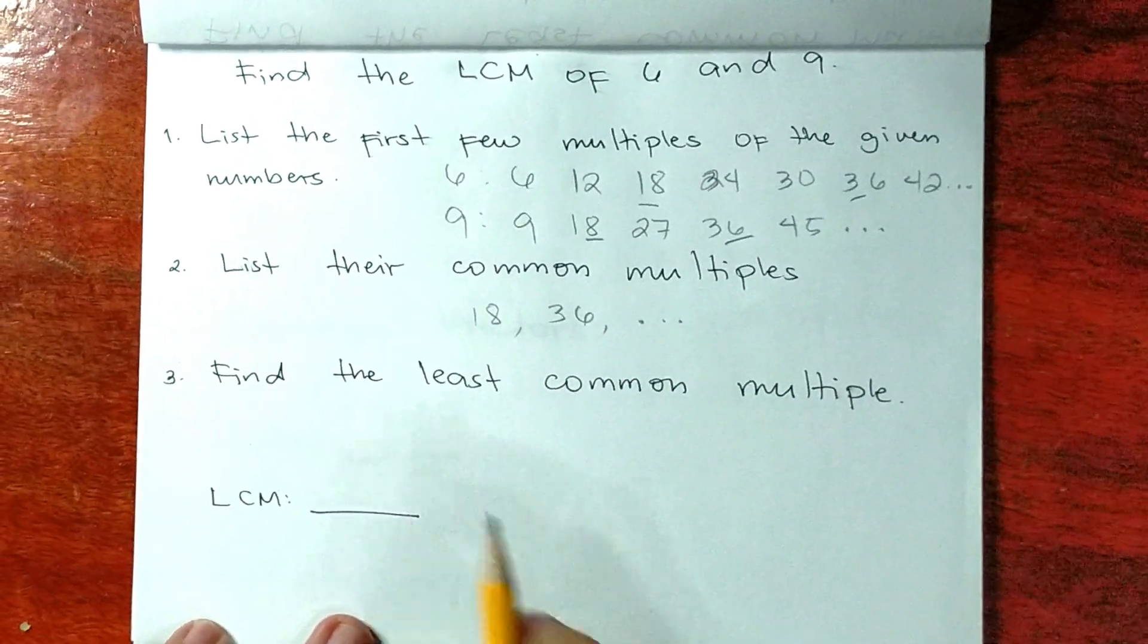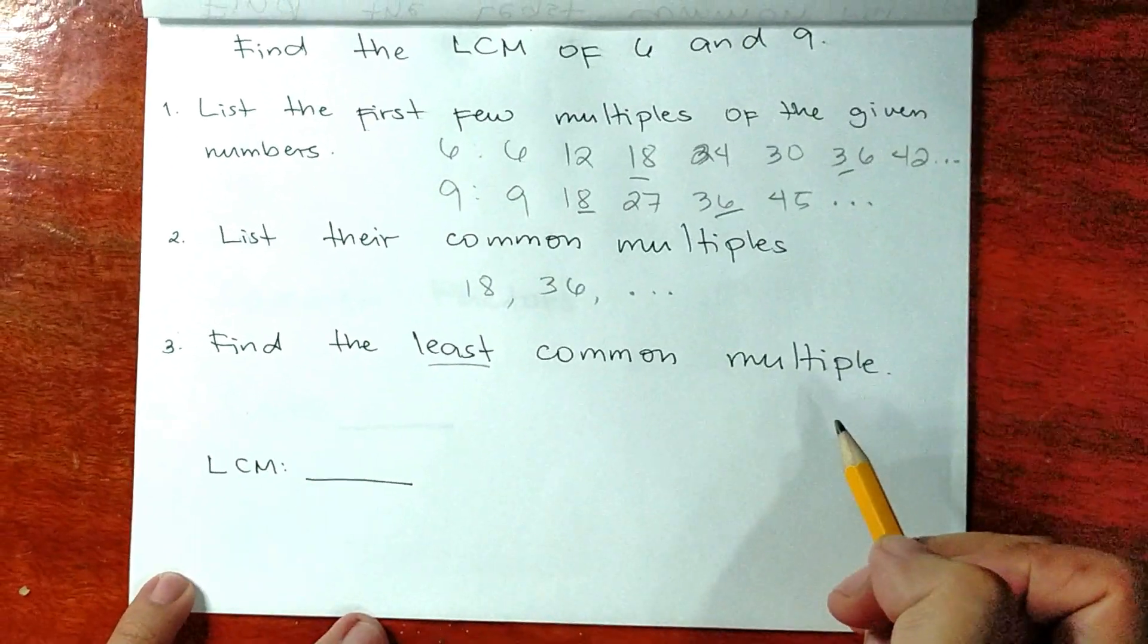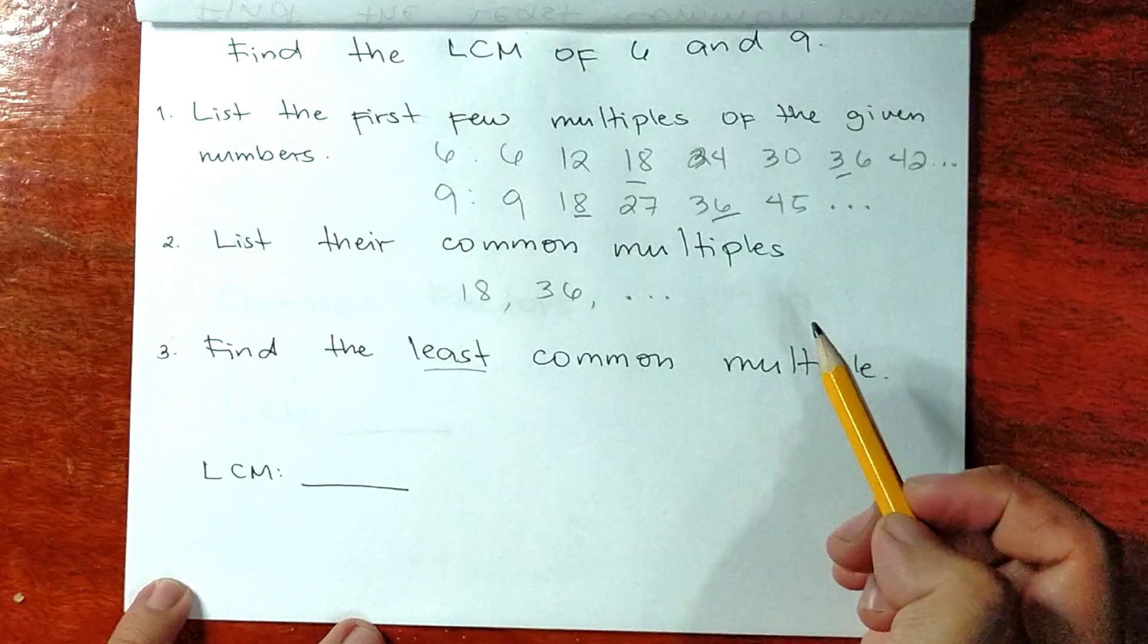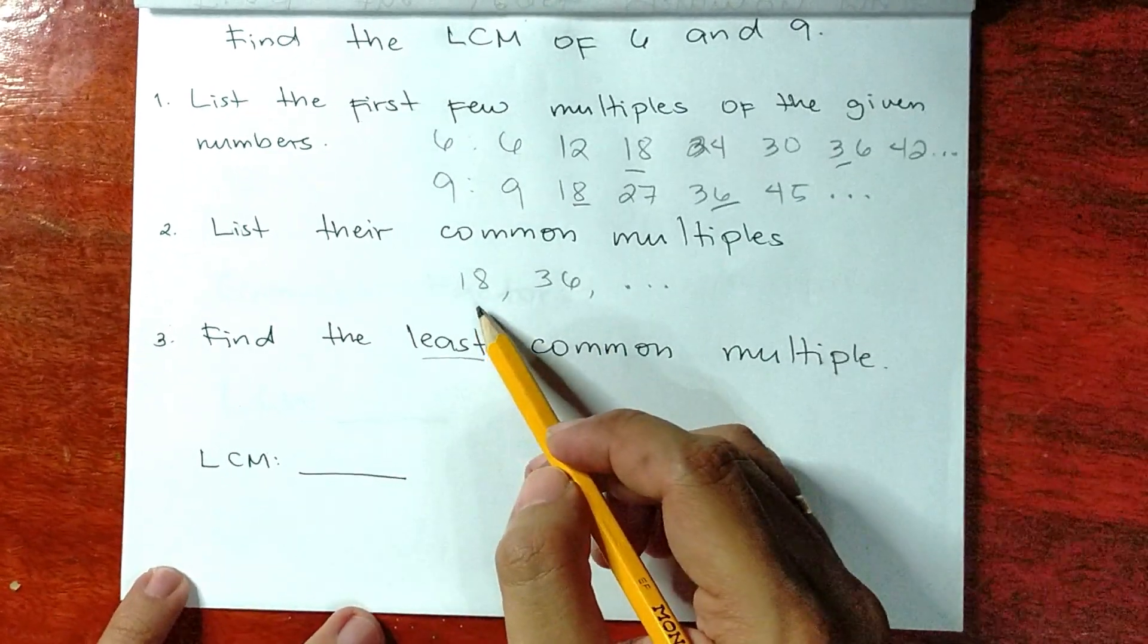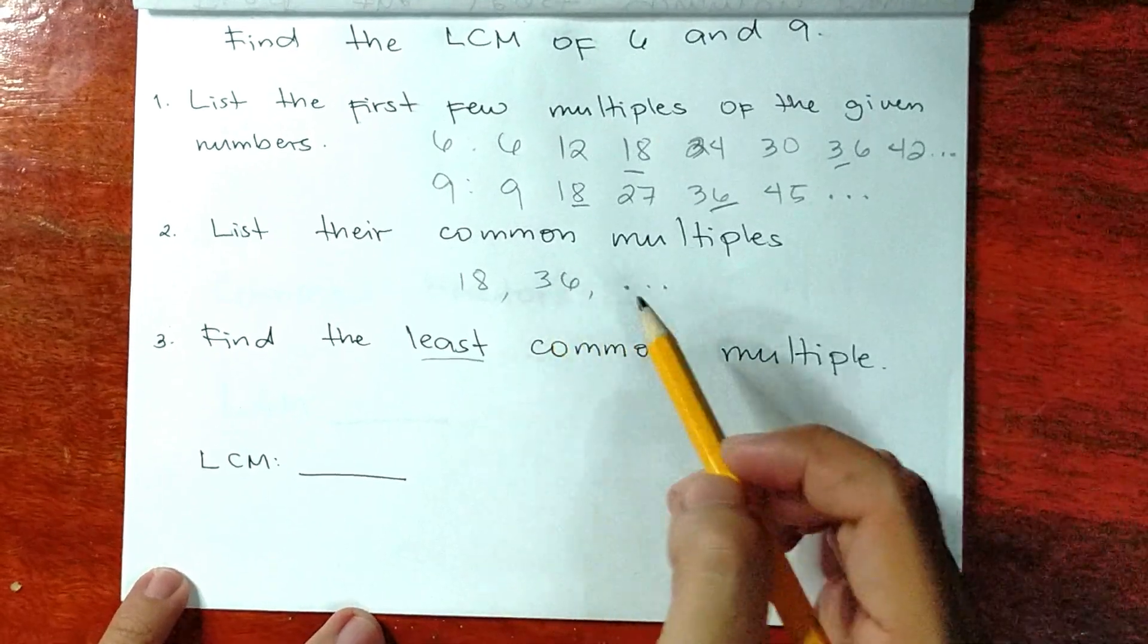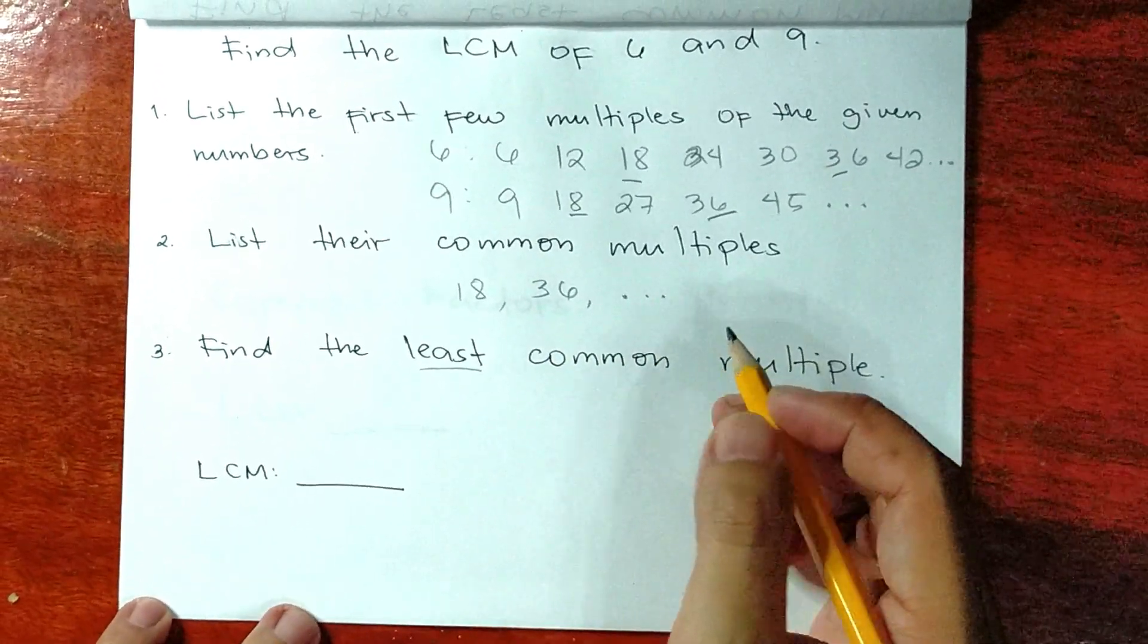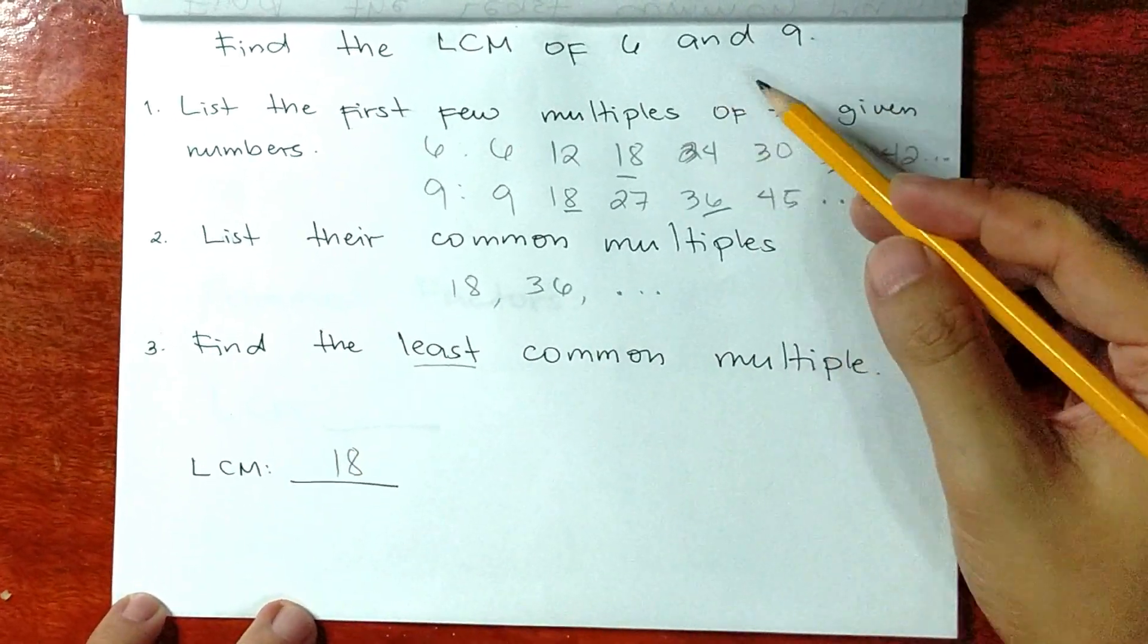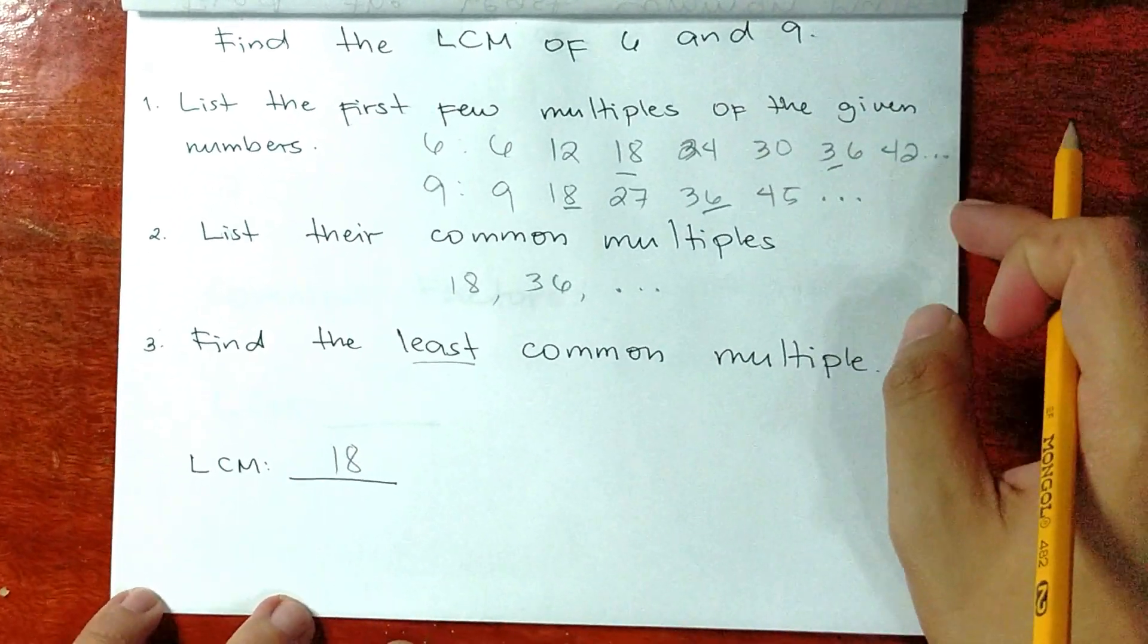To find the least common multiple, let's look at the common multiples. Which among the common multiples is the least? Correct, it's number 18. So the LCM of 6 and 9 is 18.